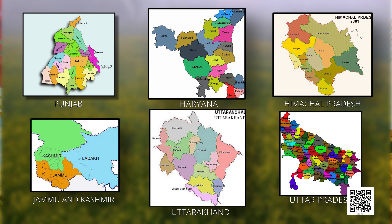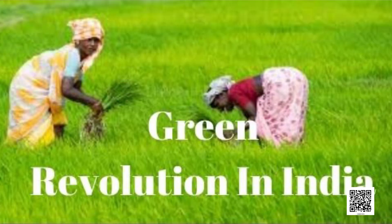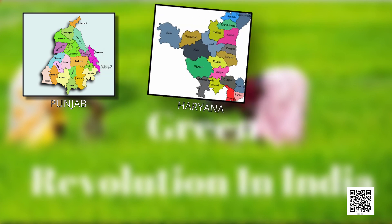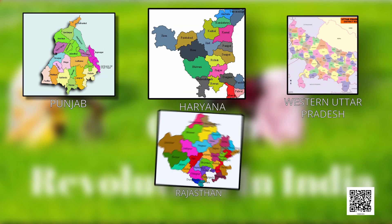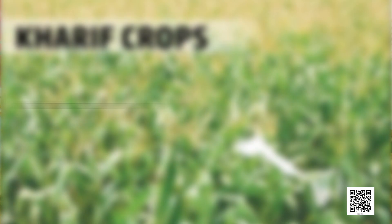However, the success of the Green Revolution in Punjab, Haryana, western Uttar Pradesh and parts of Rajasthan has also been an important factor in the growth of the above-mentioned Rabi crops. Now we talk about Kharif crops.